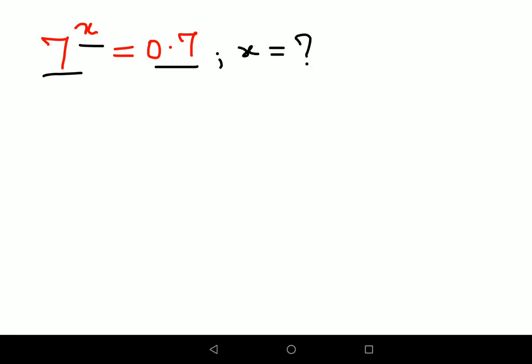Now here's what we can do. We'll keep 7 raised to x as it is, and 0.7 can be written as 7 upon 10.